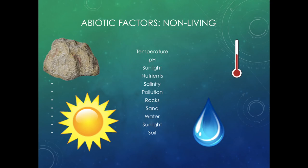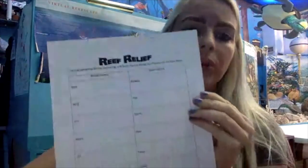In an ecosystem you have a few different factors. You have abiotic factors and biotic factors. An abiotic factor is a non-living thing in an ecosystem. The sun would be an abiotic factor — it is not living. Other examples of abiotic factors in an ecosystem would be temperature, pH, salinity (how salty the water is), nutrients, pollution, rocks, sand, and water. All of those are abiotic factors.